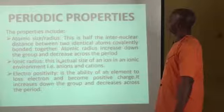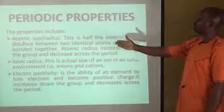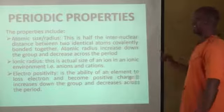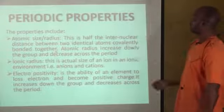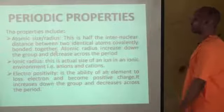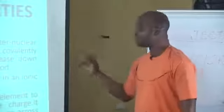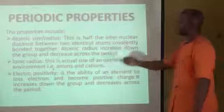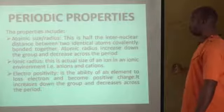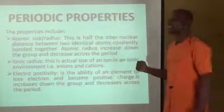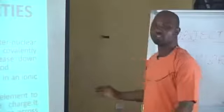Now let's look at the periodic properties of elements and their variation. One is atomic size, also called atomic radius — defined as half the internuclear distance between two identical atoms that are covalently bonded. Atomic radius increases down the group and decreases across the period. The second is ionic radius, which is the actual size of an ion in an ionic environment — it can be anions or cations. The next is electropositivity, the ability of an element to lose electron and become positively charged, same as metallic character. Electropositivity increases down the group and decreases across the period.